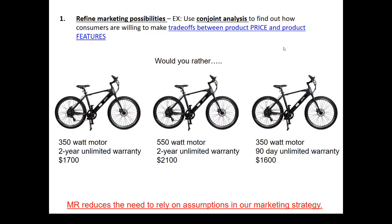Like many other marketing research techniques, conjoint analysis reduces the need to rely on assumptions in our marketing strategy. Assumptions are things we presume to be true despite not having explicit empirical evidence. In marketing, we always have to have some assumptions — some things will never be known for certain and we can't conduct research about everything. But for those high-stakes assumptions, those things that if we're wrong could have cataclysmic results, marketing research is often valuable.